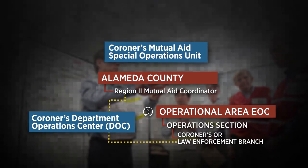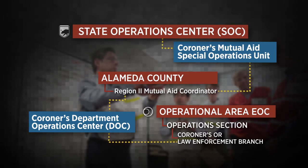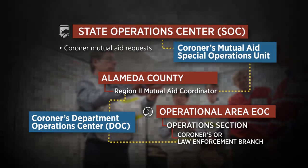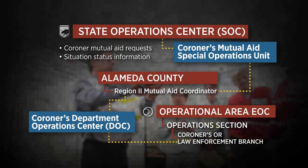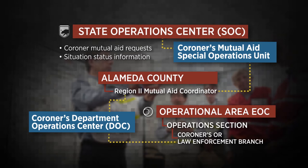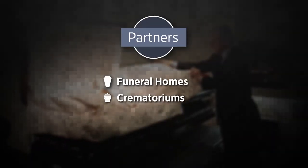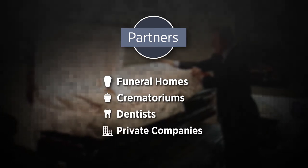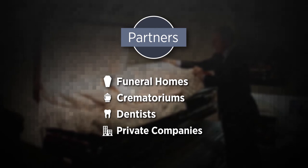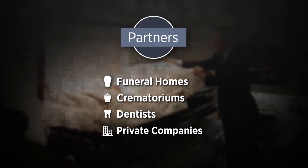It is likely that a coroner's mutual aid special operations unit would be established at the SOC to receive, analyze, and fill coroner mutual aid requests and develop situation status information. The mutual aid process works such that a local jurisdiction reaches out to the region for support, and the mutual aid coordinator reaches out through the state for additional levels of support. The National Guard is the next line of defense after the regions have been overwhelmed. The coroner will communicate and coordinate with an extensive list of partners beyond the EOC, such as funeral homes and dentists, and if needed, will ask for your assistance with this coordination.